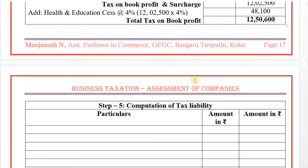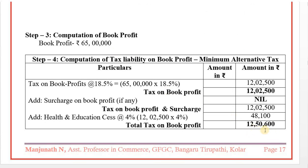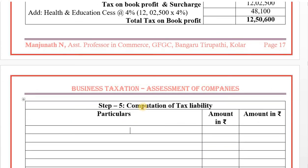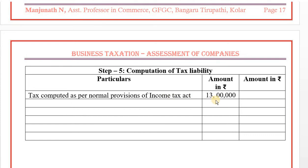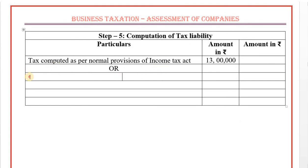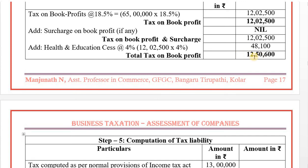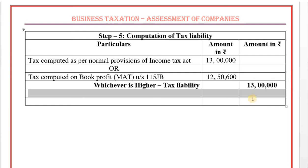Now step 5 is complete. Step number 5: tax liability comparison. Normal tax liability: 13 lakhs. Book profit tax liability: 12 lakh 50,600. Tax liability computed as per section 115JB — whichever is higher. 13 lakhs is higher than 12 lakh 50,600, so 13 lakhs is the tax liability.